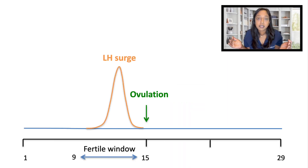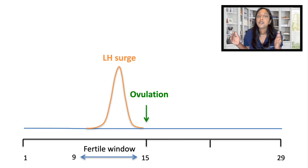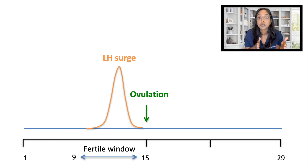If cycles are regular, this is reassuring that ovulation is occurring and we can calculate when the fertile window would be. You take your cycle length on average — let's say it's 29 days. The luteal phase, the timeframe after ovulation and before the next period, is consistent in its duration and should be about 12 to 14 days. So if your cycles are 29 days, you subtract 14 and that is the approximate time of ovulation. Then subtract another six days and that is the fertile window.